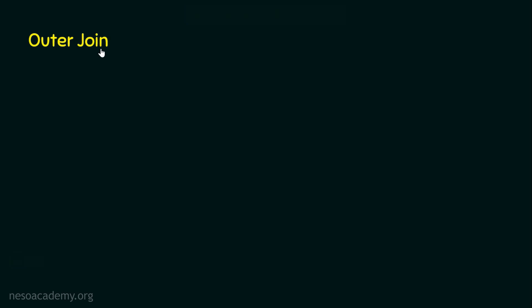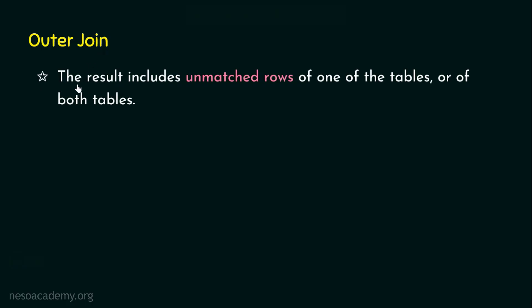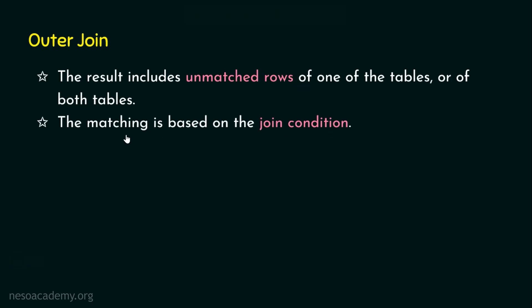In inner join, only matching rows are included. But in the outer join, the output table includes unmatched rows of one of the tables or of both tables. So in outer join, not just matching rows will appear — even unmatching rows will appear in the output. When we see an example it will be more clear. The matching is based on the join condition. Whatever join we are dealing with, everything will have a join condition. If there is no join condition and everything has to be combined, then it's simply the relational algebra fundamental operation which is the Cartesian product.